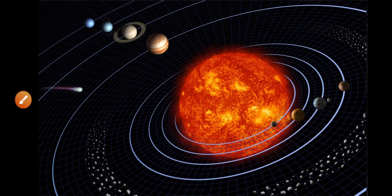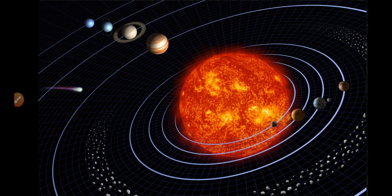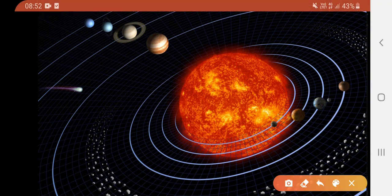This is a picture of the solar system with the sun at the center, and these are the asteroid belts.